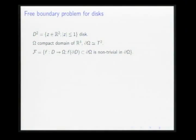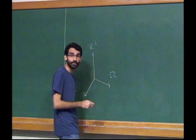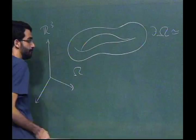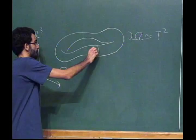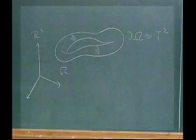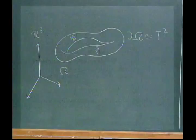The problem I want to consider is the following. In R^3, we look at a domain omega bounded by a torus. In this torus, we have homotopically non-trivial curves that bound disks in omega. The problem is to minimize their area — a problem proposed by Courant in the 1940s. If we have a solution or critical point to this problem, the first variation of area must be zero for all admissible variations, where admissible variations are those that preserve the boundary of the region. A critical point must therefore be a free-boundary minimal surface.